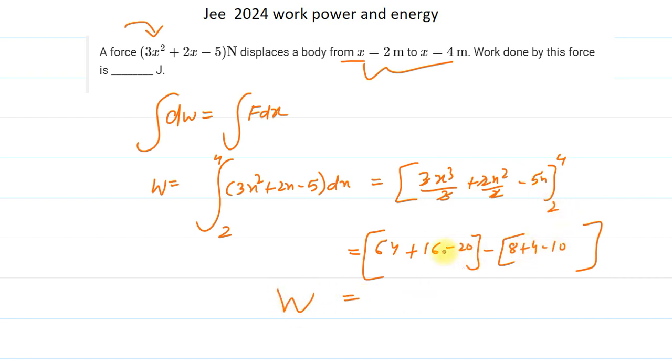So 80 minus 20 is 60. And 60 minus, it is 12 minus 10 is 2. So it is 60 minus 2, which equals 58 joules.